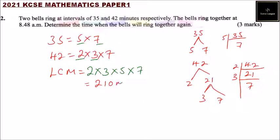These are minutes, so you can convert this to hours. One hour has 60 minutes, so 210 divided by 60 gives you 3 hours and 30 minutes. Since the bells had rung together at 8:48, you say 8:48, then add 3 hours 30 minutes.